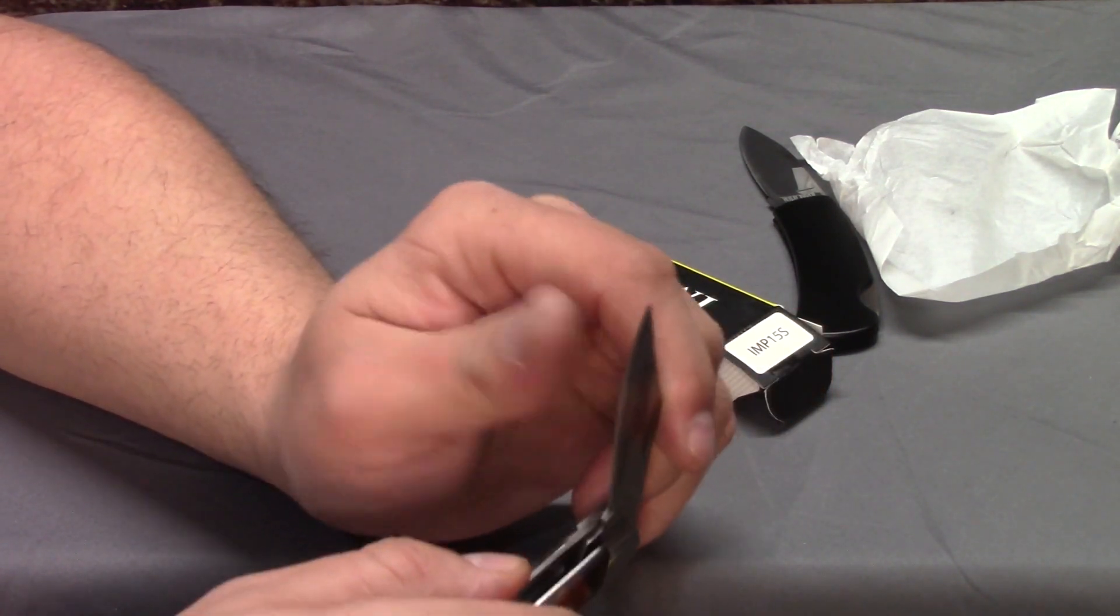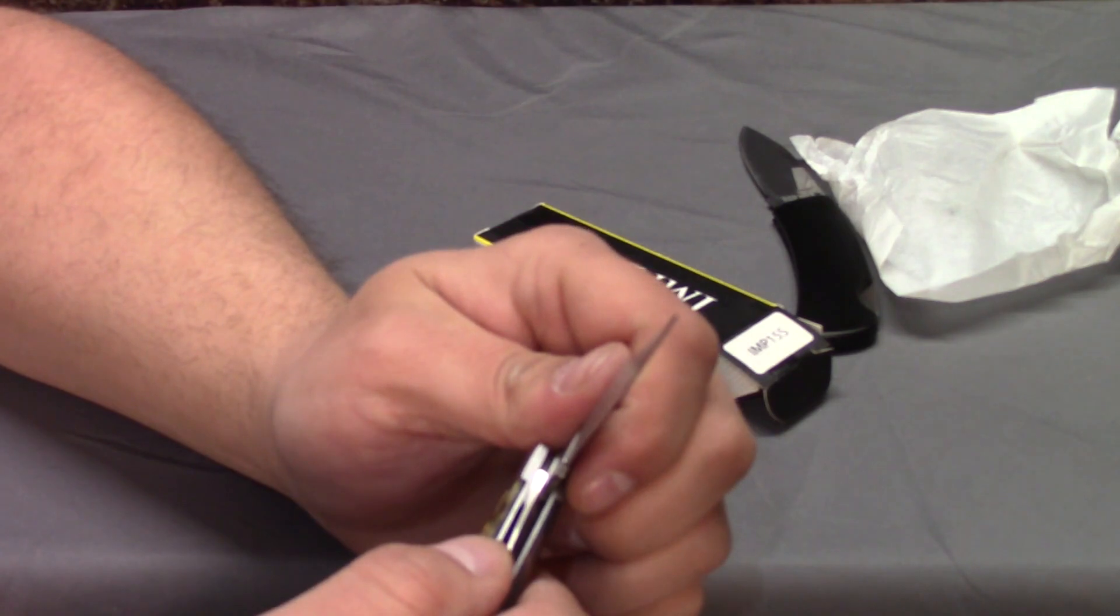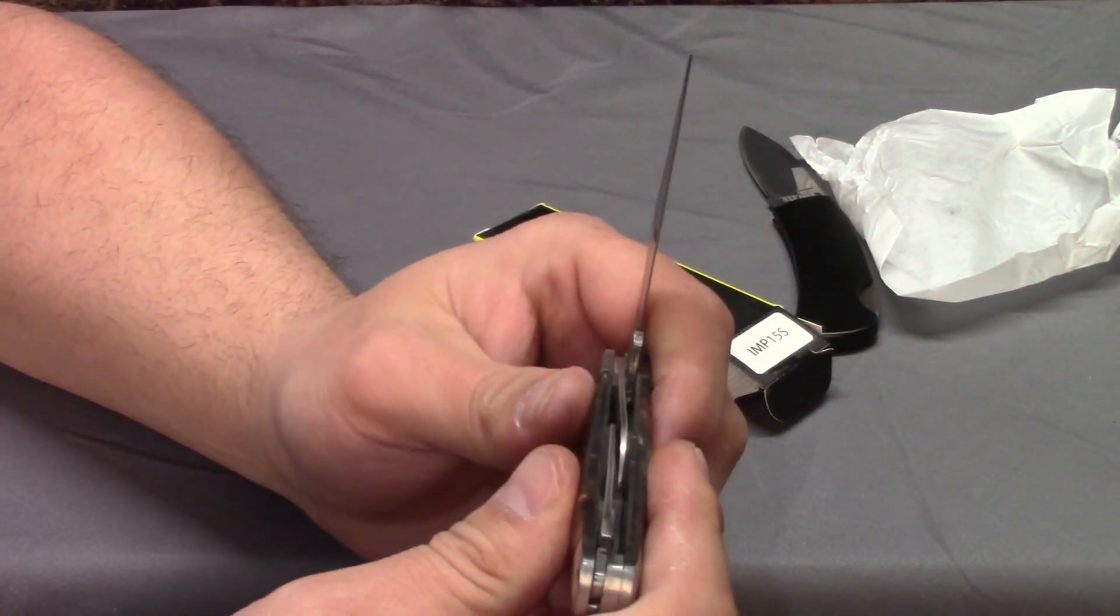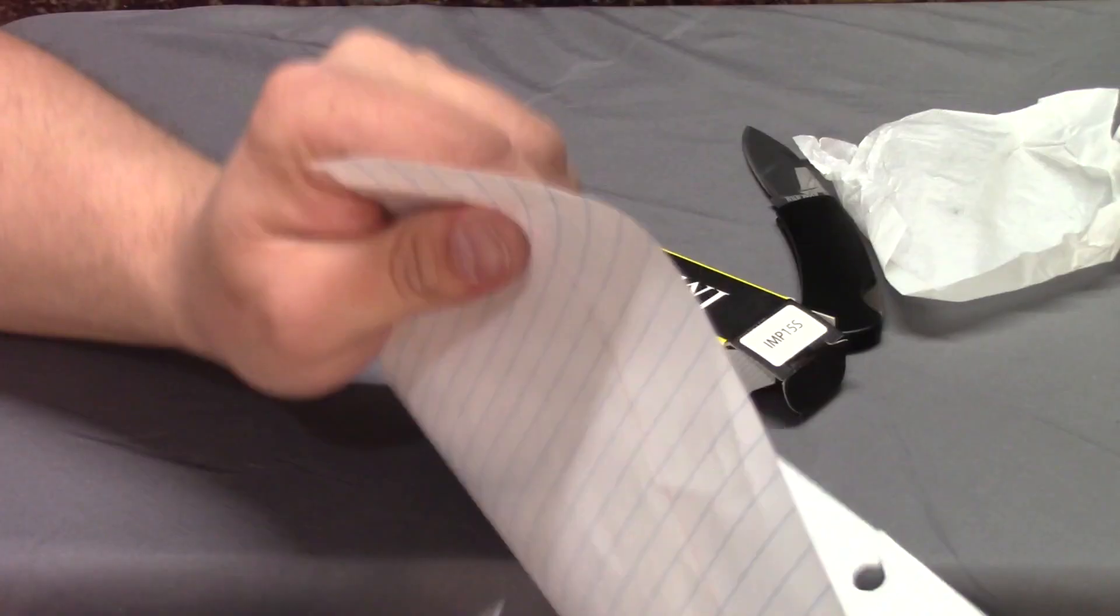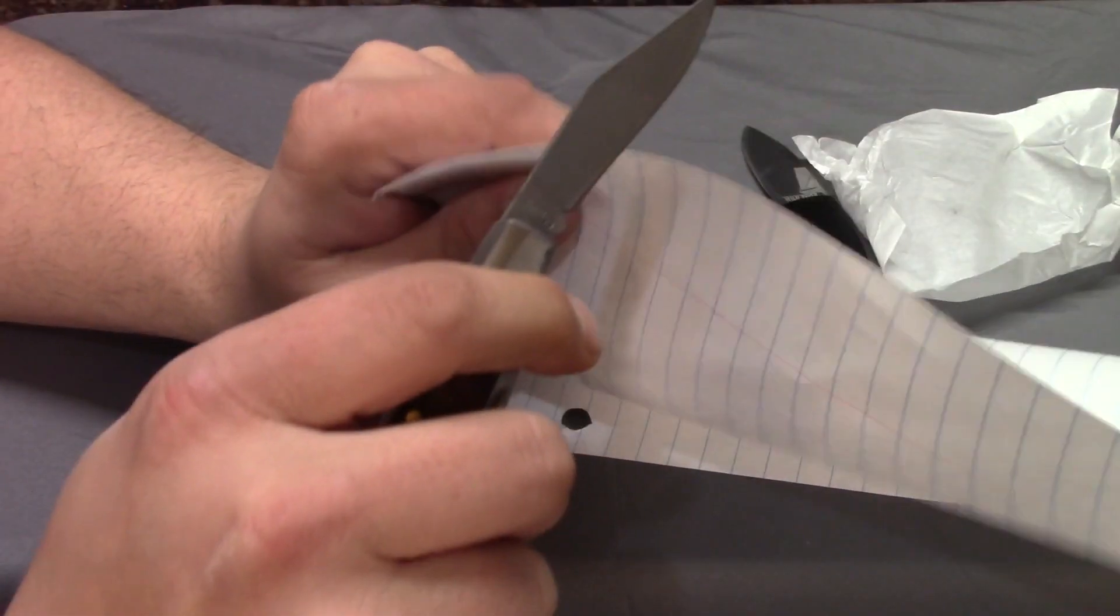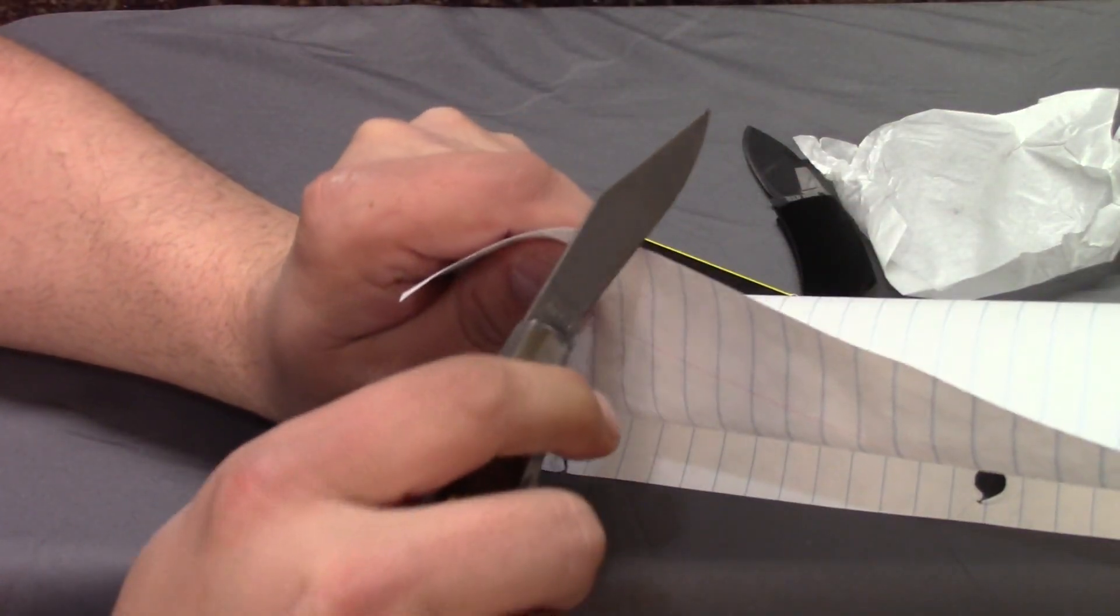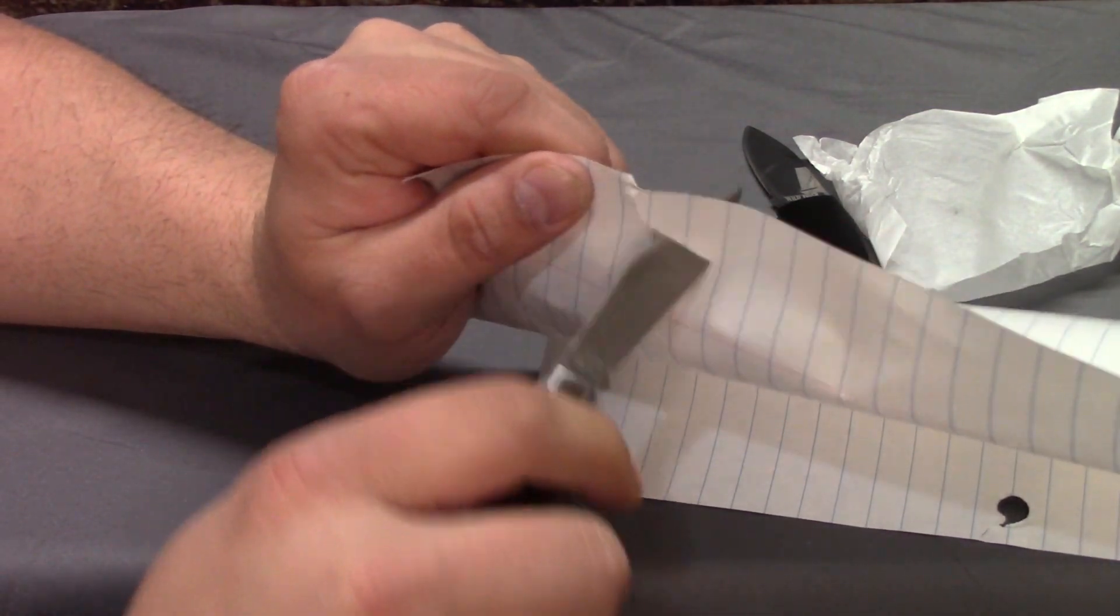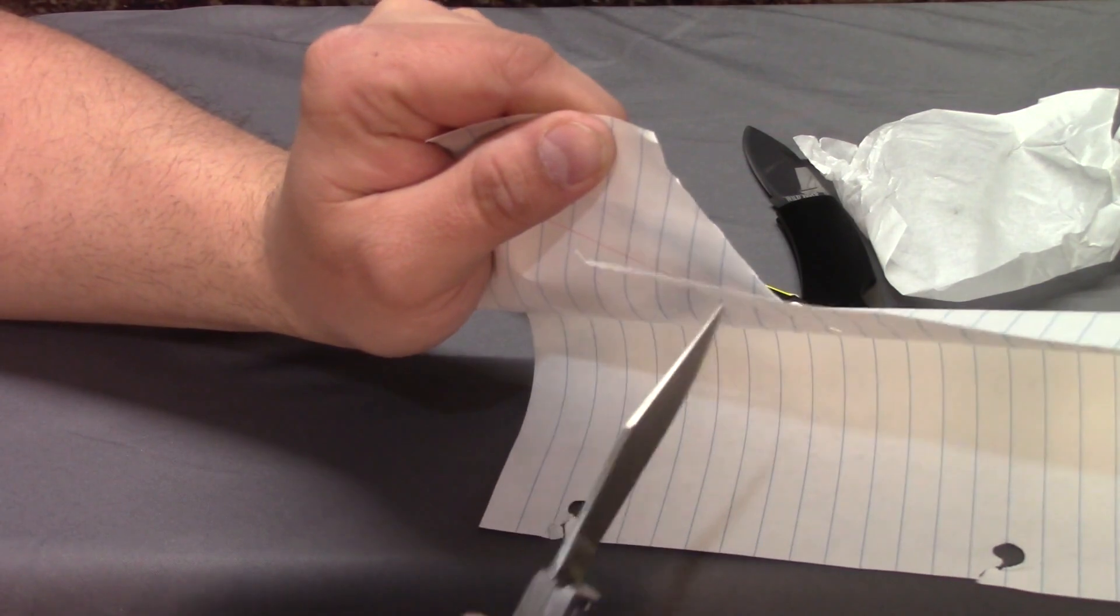Does it feel like it has an edge on it? It feels like it has an edge on it. I'm not really sure how well it's going to cut. But let's get to that. So, a jump cut. With the clip point blade. Let's see, does it have an edge on it? It has a better edge on it than it felt like it had.